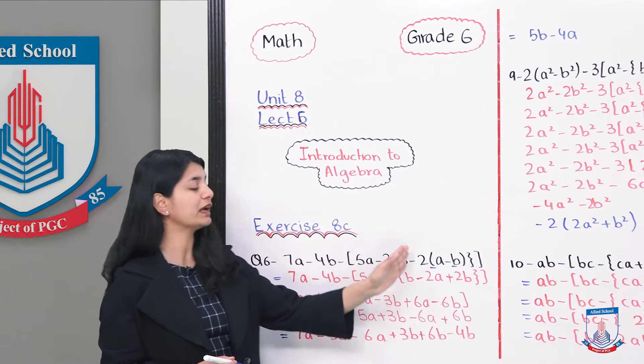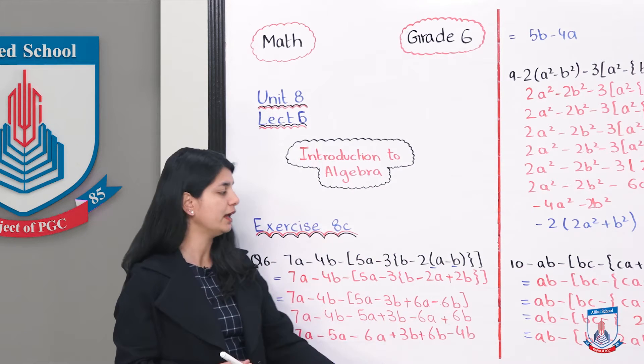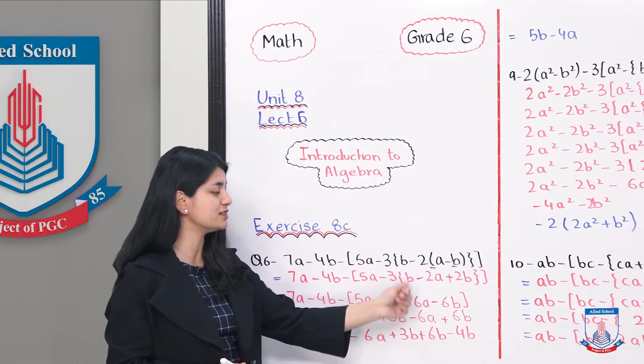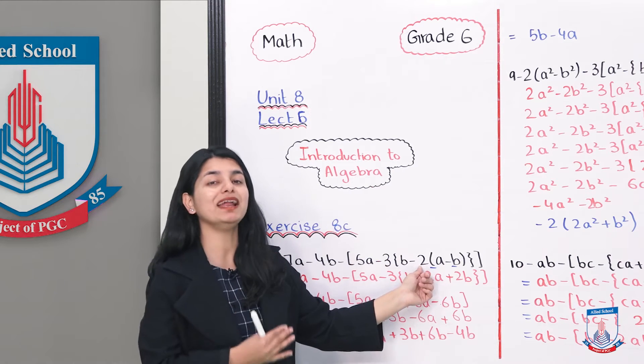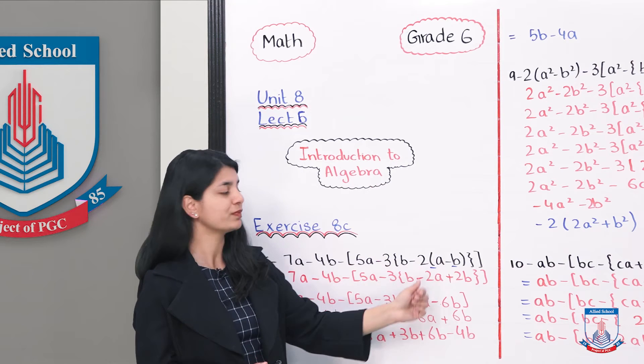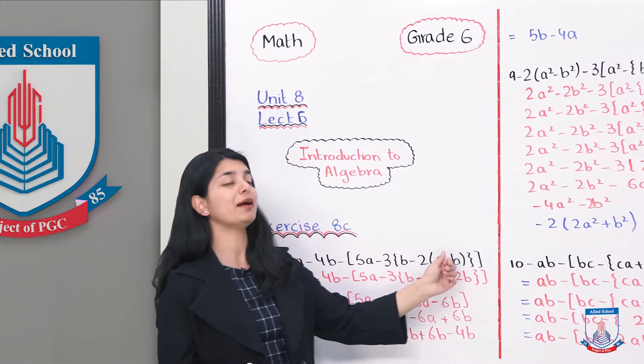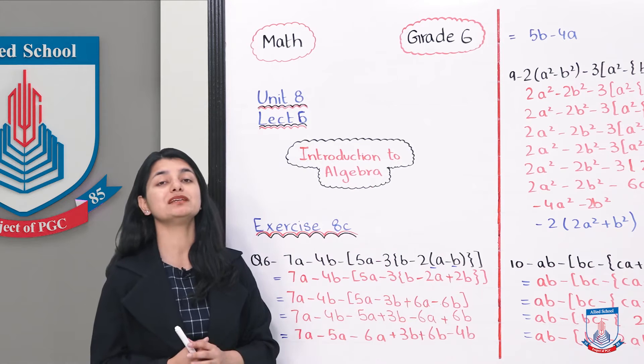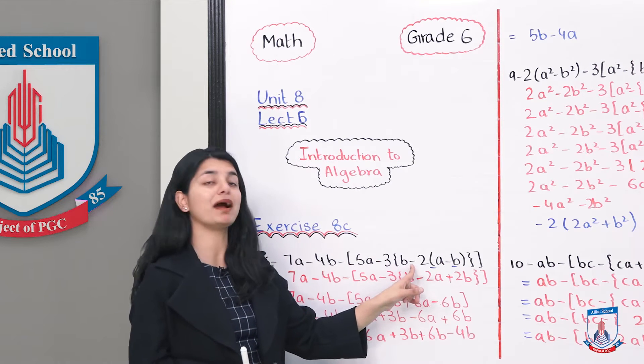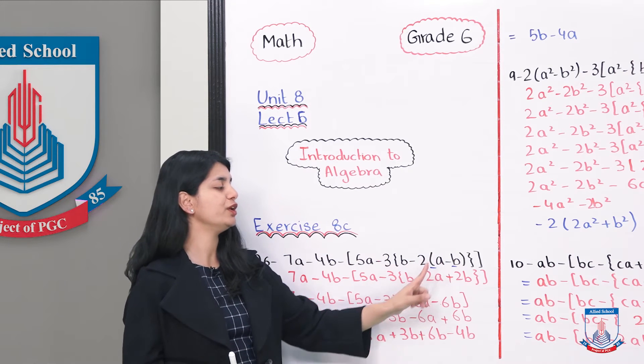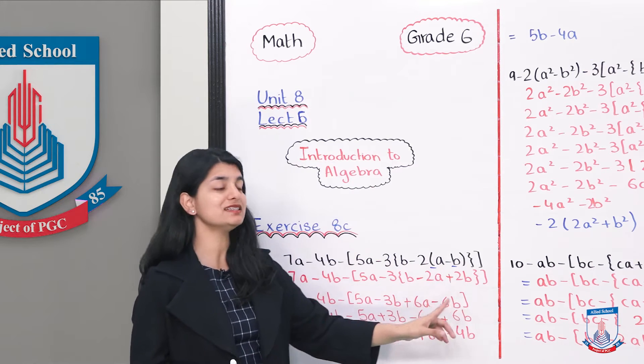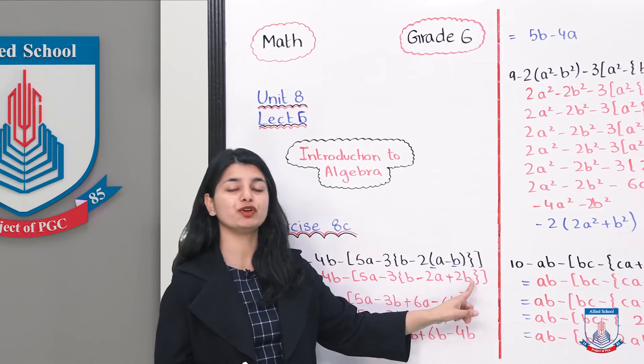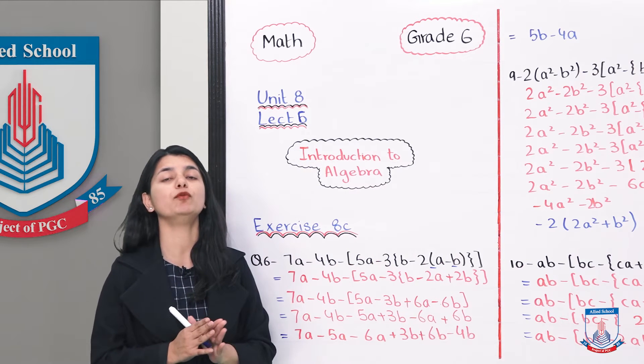So this is what we are going to address sab se pehle. Uska tariqe ka yeh hoga ke baaki sab kuch jo hai wo same rehta hai. Phir aap parenthesis ke paas tak answer copy karte ho and then you start multiplying jo parenthesis ke baahir number hai. Usse andar wali cheezo ko. Jaise ki 2 baahir hai, A minus B andar hai. 2 ko aap dono se multiply karenge. 2 ke saath minus ka sign hai. So minus 2 into A is minus 2A. Minus 2 into minus B is plus 2B.